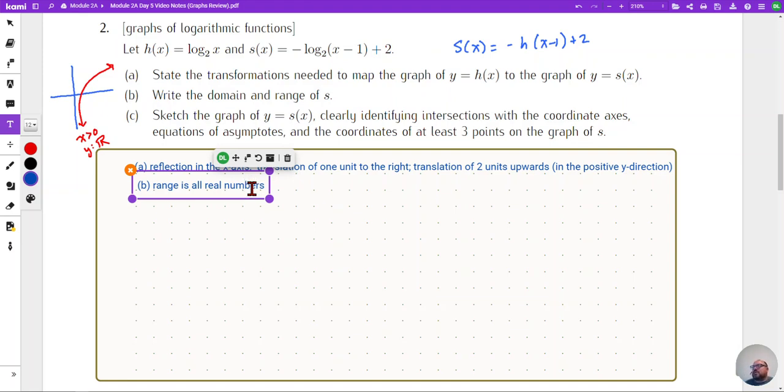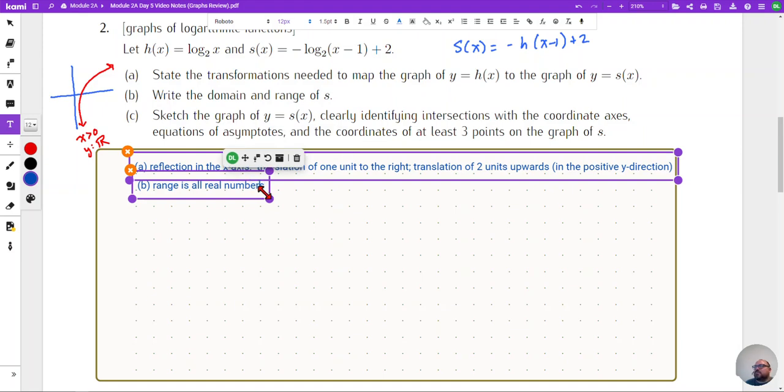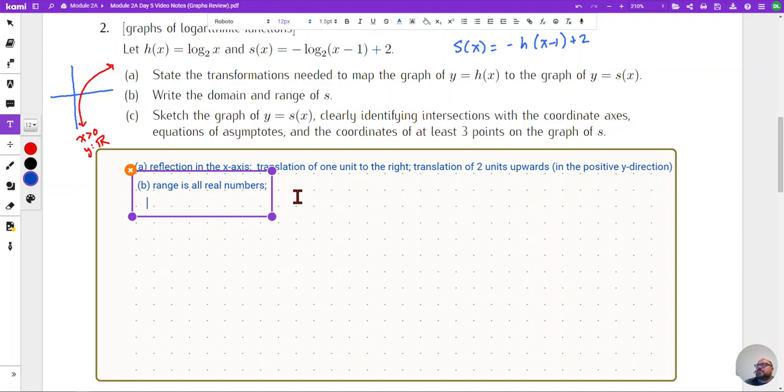So that means that for my domain, the domain is all values of x greater than one because I've moved that vertical asymptote from x equals zero to x equals one. So I've written my domain.